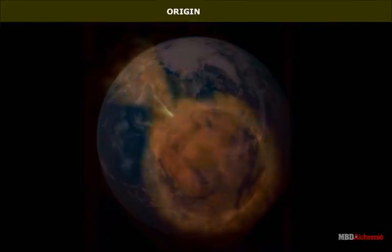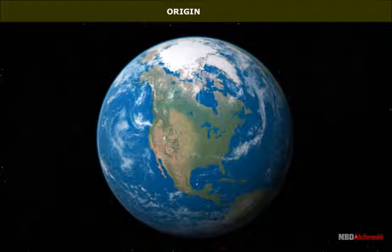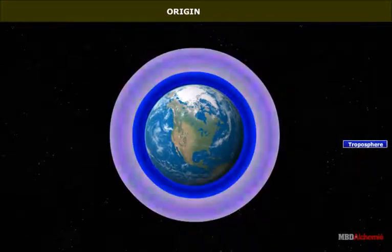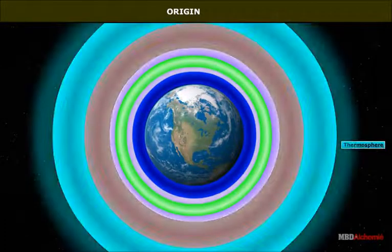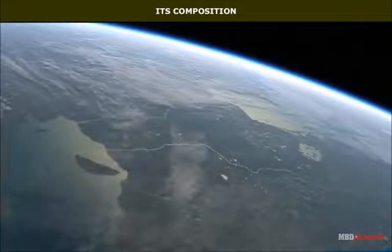It gradually cooled down. With this cooling, the gases separated from the heavier particles. The gases then formed a blanket around the heavier particles which settled in the center forming the lithosphere. The gases form the atmosphere.